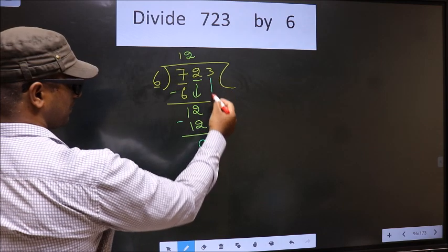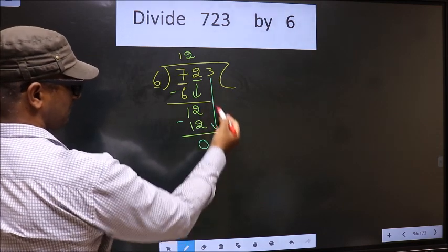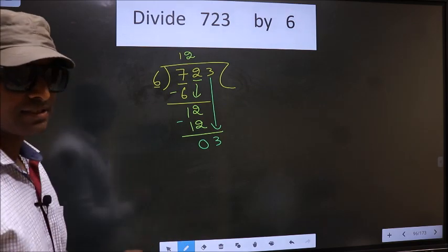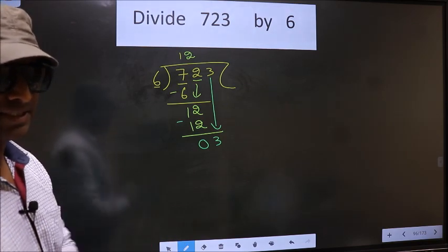Now you bring down the beside number, so 3 down. This is where the mistake happens. And the mistake is this.